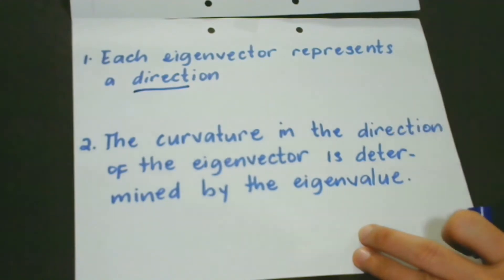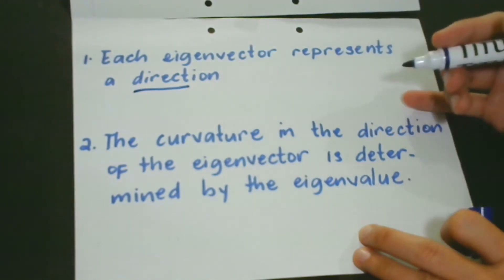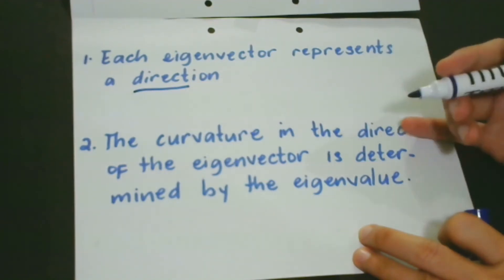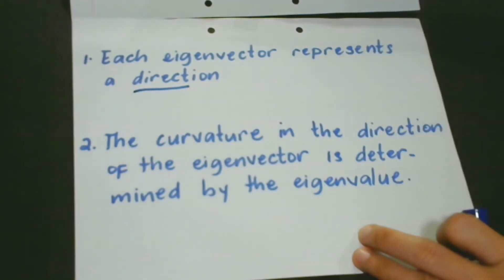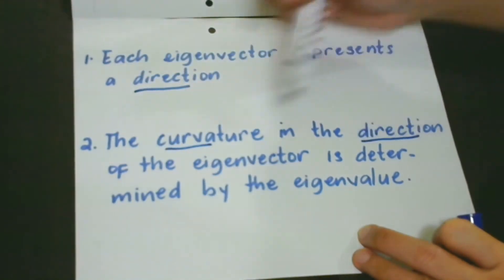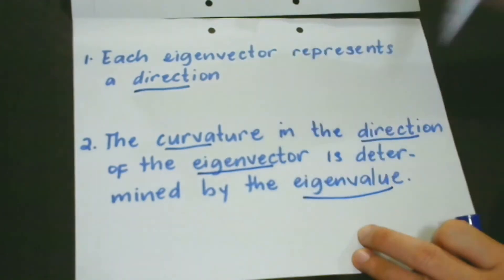The second one is that the curvature in the direction of the eigenvector is determined by the eigenvalue. Let me underline some of the most important words here.